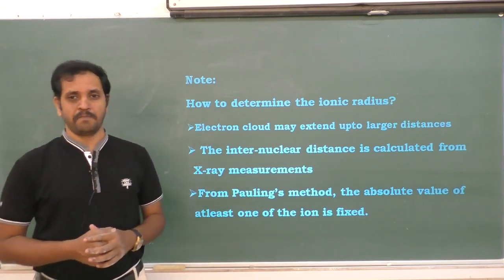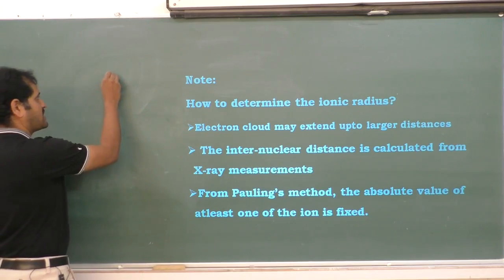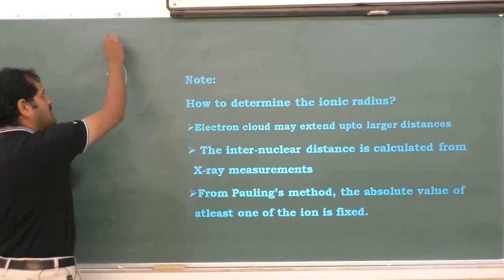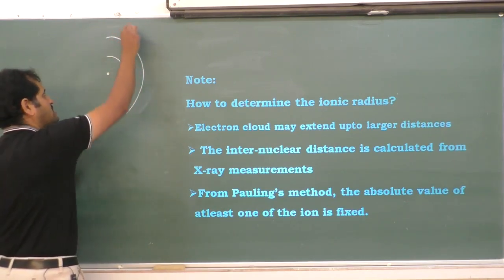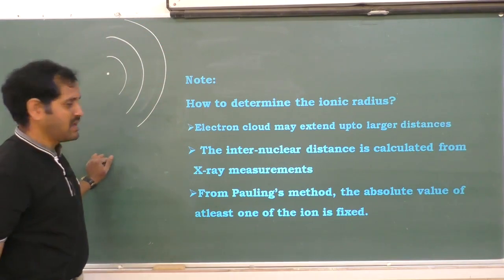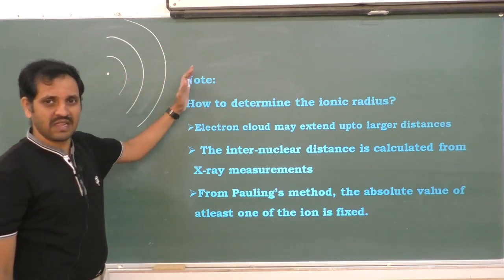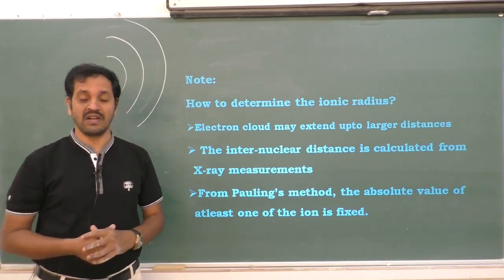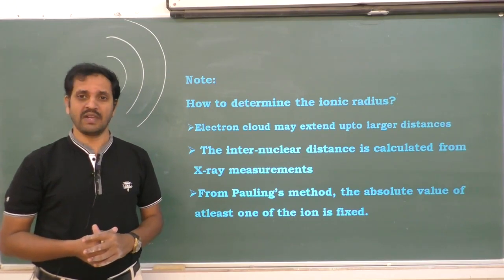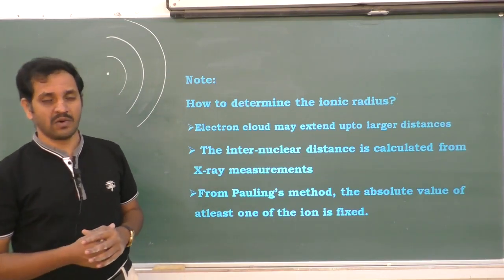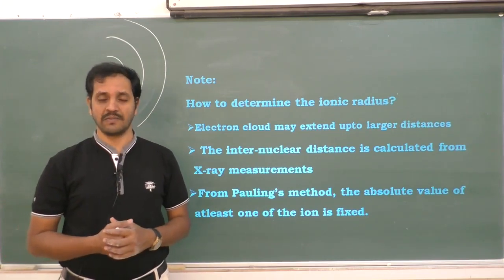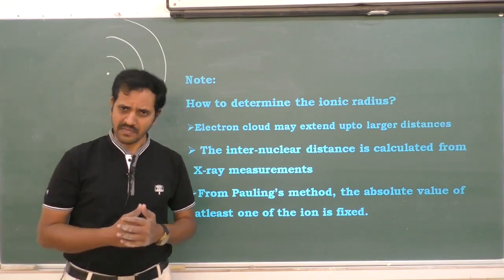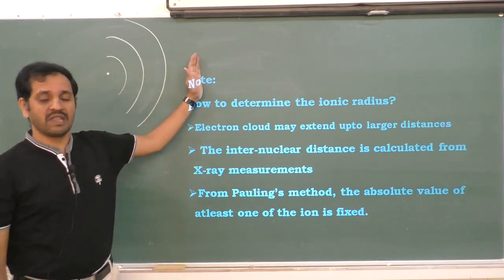In the case of an ion or atom, at the center there is a nucleus surrounded by a specific number of energy shells — K shell, L shell, M shell, N shell — and in these energy shells the electrons are distributed. This electron cloud may extend to larger distances; there is no sharp boundary for the distribution of electrons.